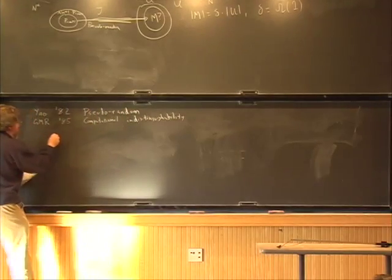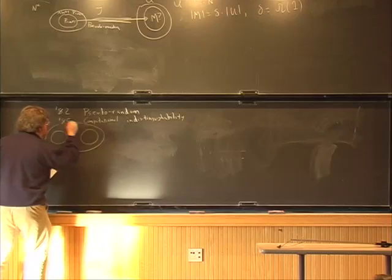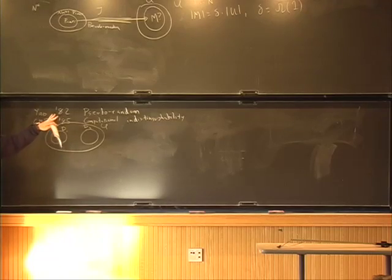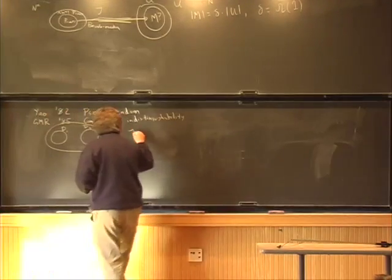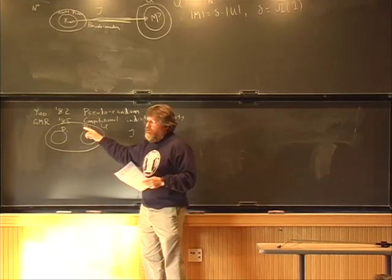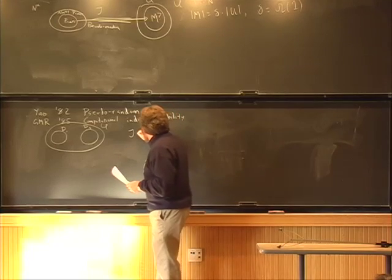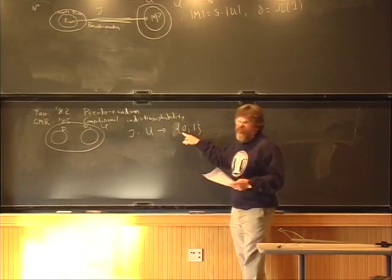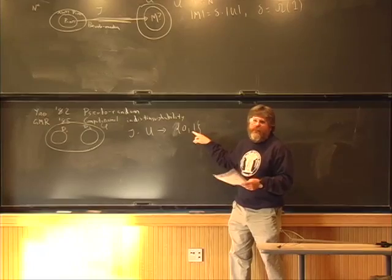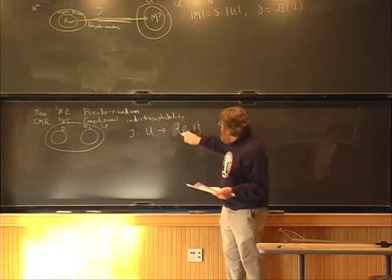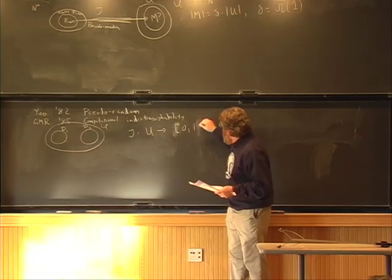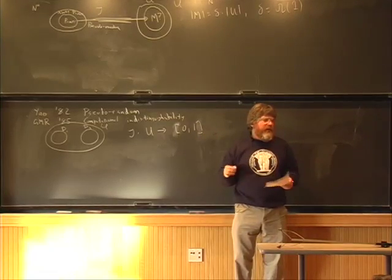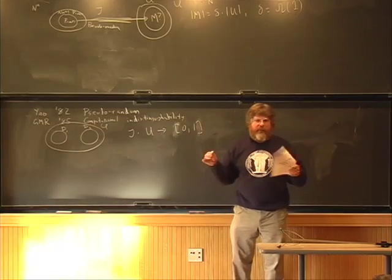The general picture is we have two distributions on the same underlying universe, and we have a class of tests. The tests are functions from the universe. In complexity theory, we usually think of tests as outputting a Boolean value 0 or 1. It's actually more useful to allow tests to take on intermediate values between 0 and 1, as long as they're in some bounded range.